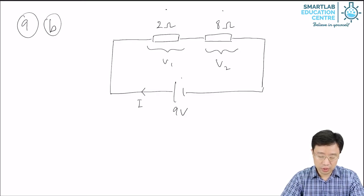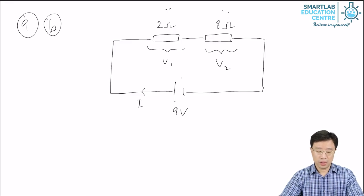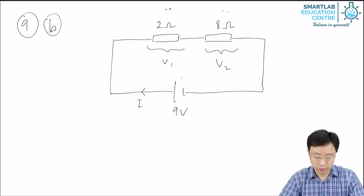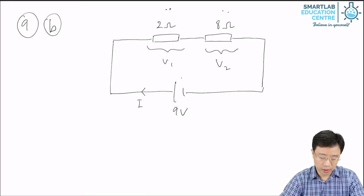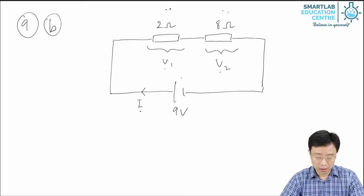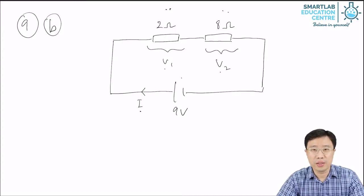These two resistors are arranged in series. In this example, we are going to find the current I, the PD V1, and the PD V2.